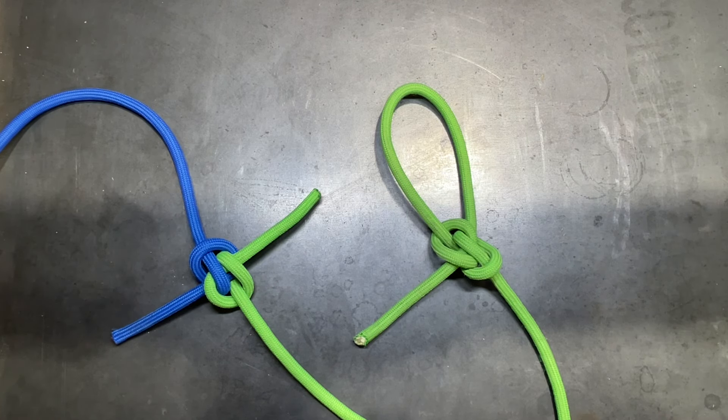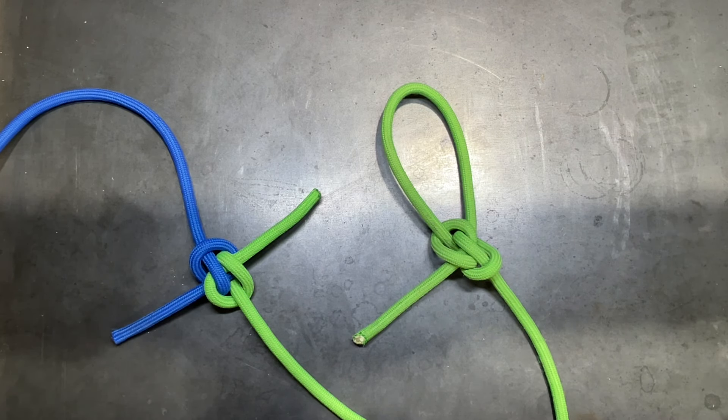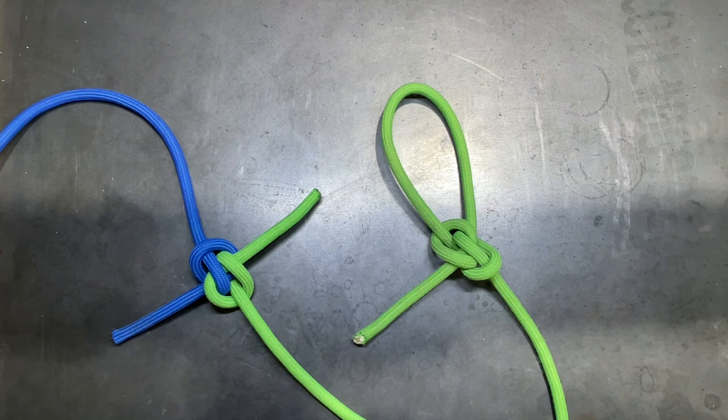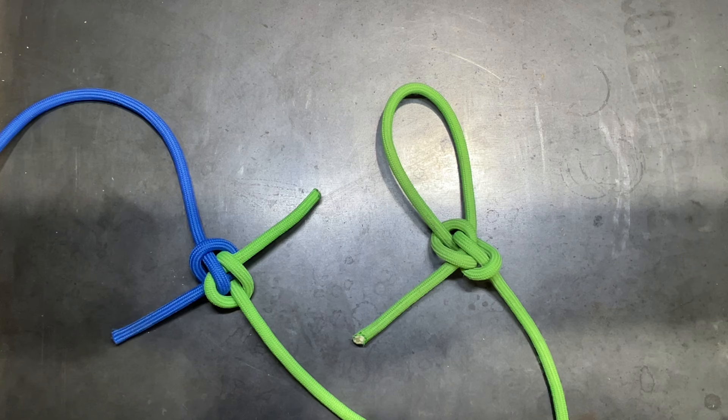Today I'm going to show you how to tie two of the best knots you could ever learn. One is a loop knot called the Zeppelin loop, and the other is a bend knot for tying two ropes together called the Zeppelin bend.